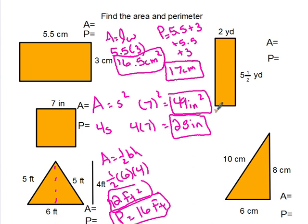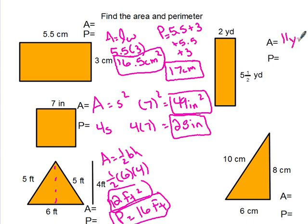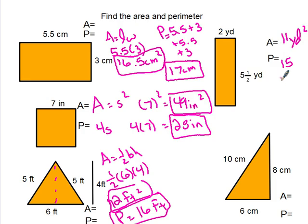Over here, rectangle again. Area is just 2 times 5.5 — so 5.5 times 2 is 11, giving us 11 yards squared. Perimeter: 5.5 plus 2 plus 5.5 plus 2 equals 15 yards.